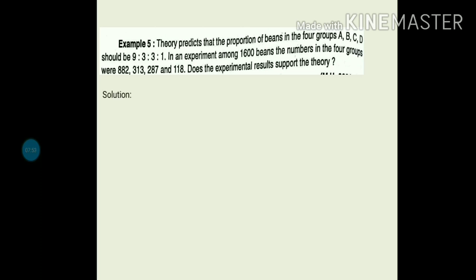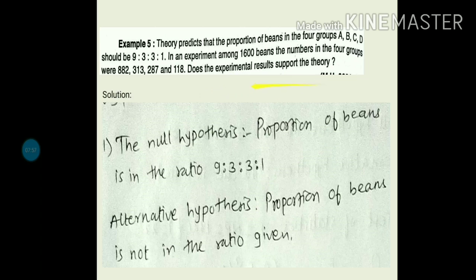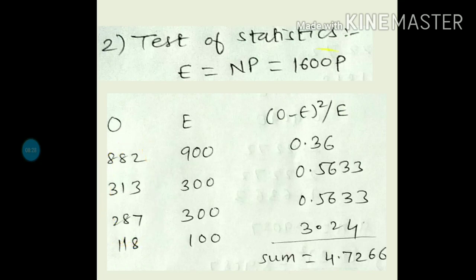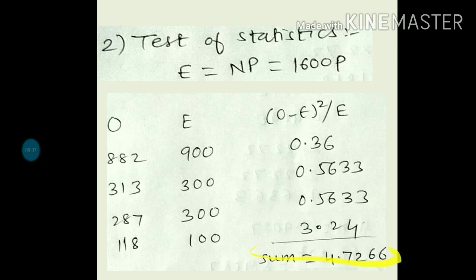Null hypothesis: experimental result supports the theory — proportion of beans is in ratio 9:3:3:1. Alternate hypothesis: experimental result does not support the theory — proportion is not in ratio 9:3:3:1. Testing the given statistic: expected frequencies are N into P. Just multiply by 1600 — for group A: 9 by 16 times 1600 equals 900; for group B: 3 by 16 times 1600 equals 300; similarly for remaining groups. Apply the formula (O minus E) squared upon E, find summation. Required chi-square is 4.73.